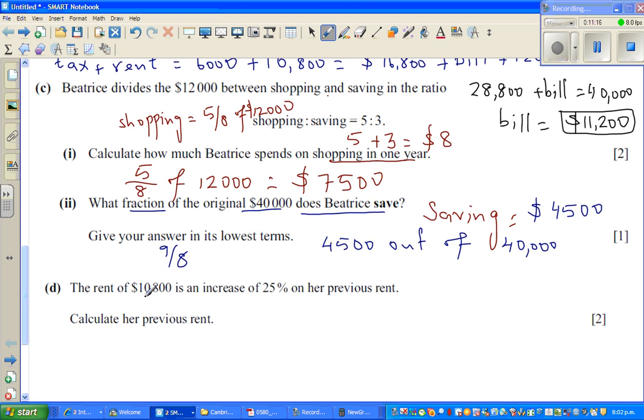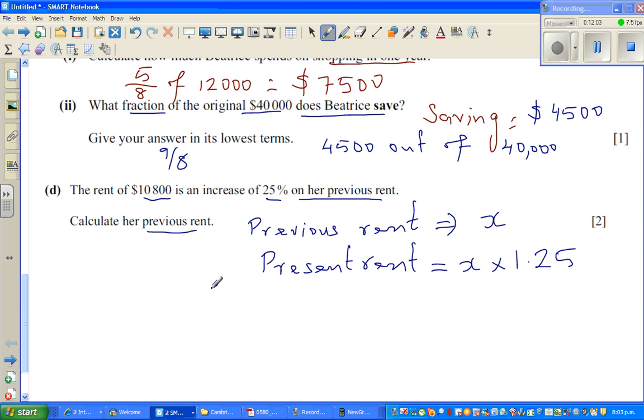The final question. The rent of $10,800 is a 25% increase of the previous rent. So what's the previous rent? We'll use a little algebra here. So let's say the previous rent was X. So the current rent or the present rent is equal to X times 1.25. I'll explain what it means.